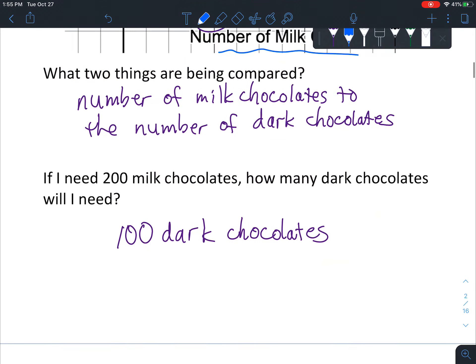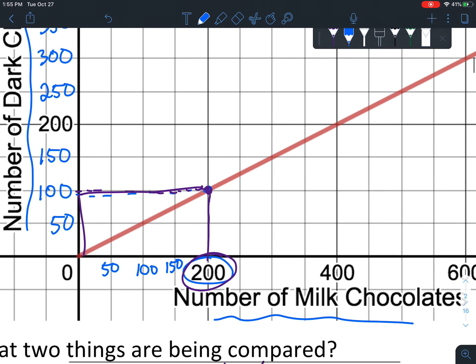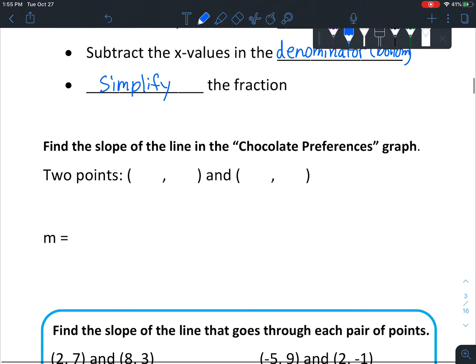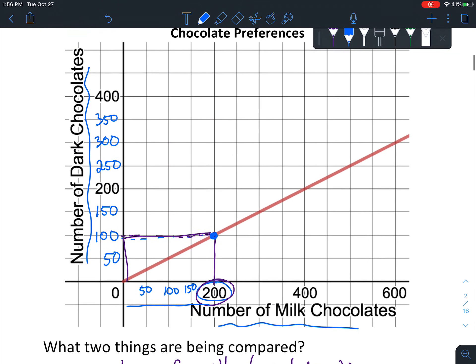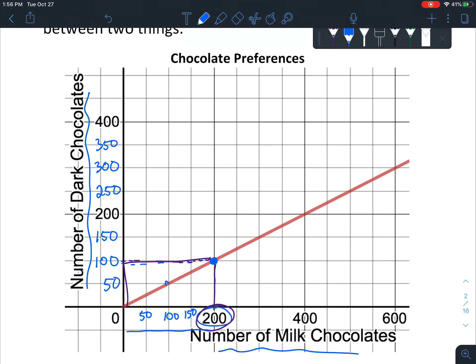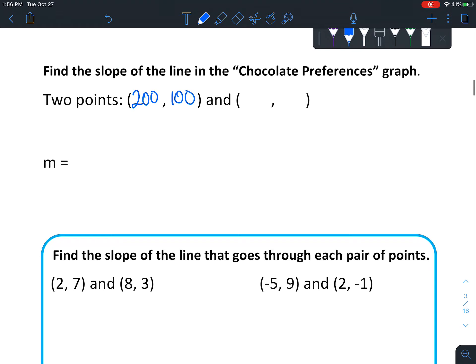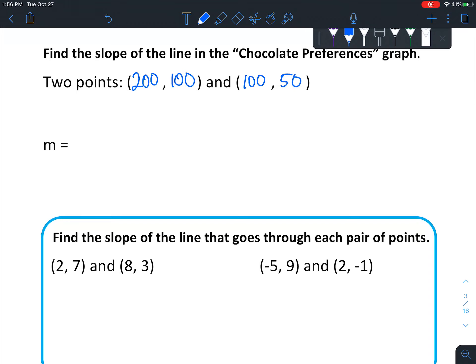So we're going to find the slope of the line in the chocolate preferences graph. So we're going to have to pick out two points. Let's go back to the graph. How about this one that we already noticed? That one is over 200. So you go over first, and then up 100. So it's 200 comma 100. And then let's look at another point. How about this one right here, which is over 100 and up 50. So x is 100, and y is 50.